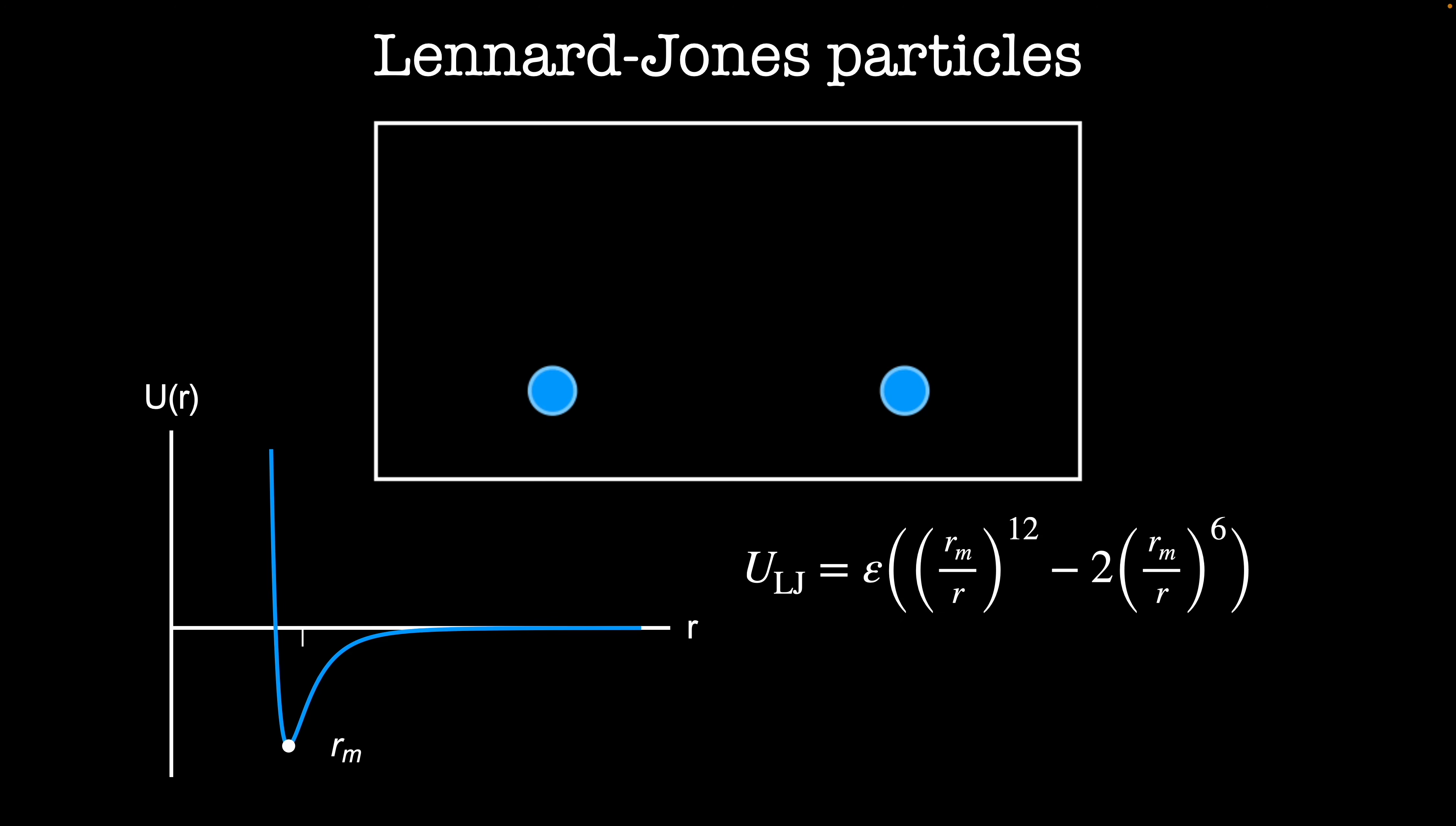The Lennard-Jones potential looks like this. The repulsive term goes like 1 over r to the 12th, which gives us a really sharp divergence here. It also has an attractive part that goes like 1 over r to the 6th, and that's responsible for the minimum at r_min. This is a model for the van der Waals interaction.